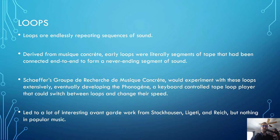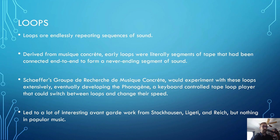Pierre Schaeffer's Groupe de Recherche de Musique Concrète would experiment with these loops extensively, eventually developing a device called the PhonoGène — a keyboard-controlled tape loop player that could switch between different loops and change their speed. It's a very cool device; they only made one hardware version. But several years ago, MakeNoise created a digital version for the Eurorack synthesizer module, and then upgraded it to the Morphagene, which is still based on this concept — you load loops to it and control it as you would any other synthesizer module.